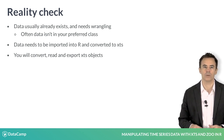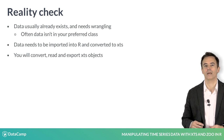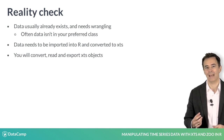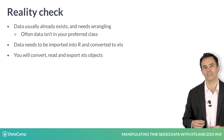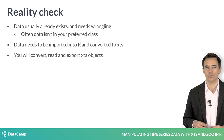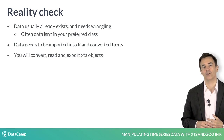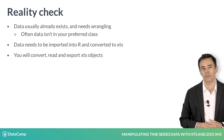In this chapter, we'll look at converting types using XTS, reading data into R as an XTS object, as well as exporting XTS objects from R for other uses.